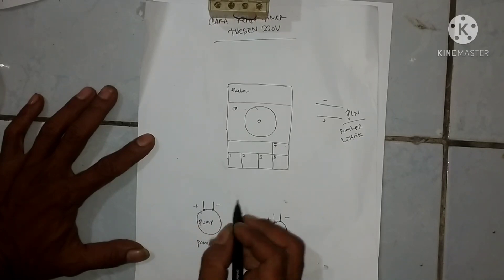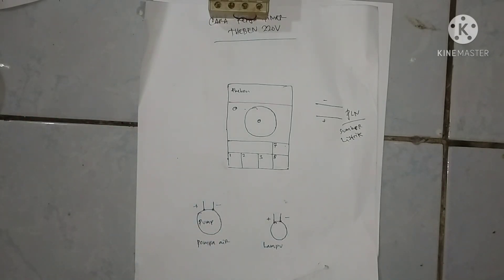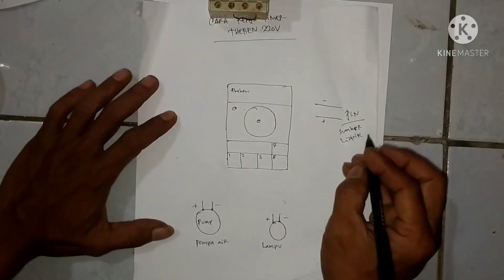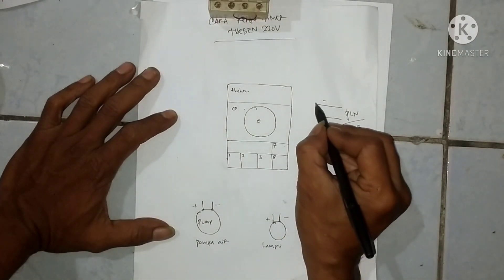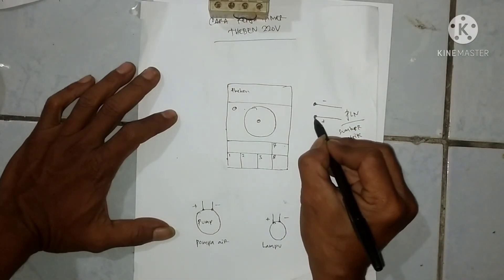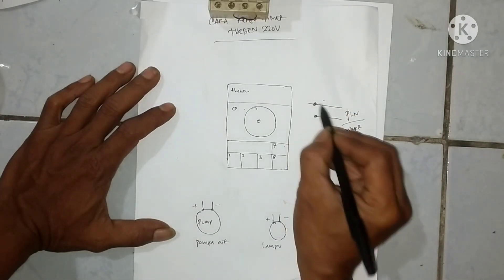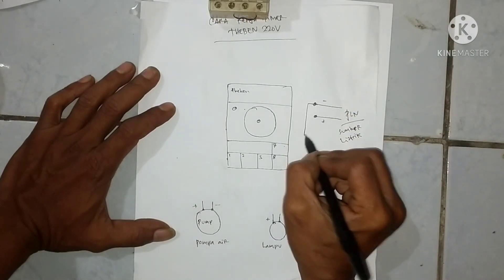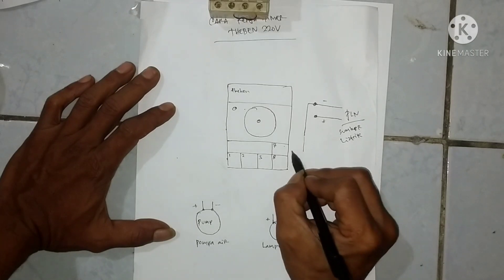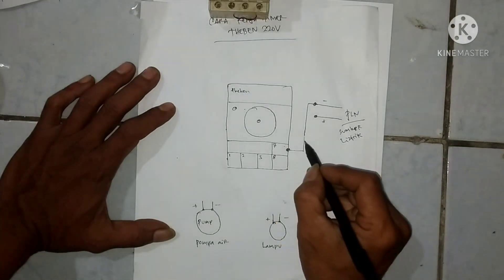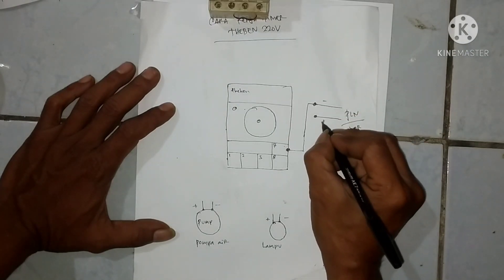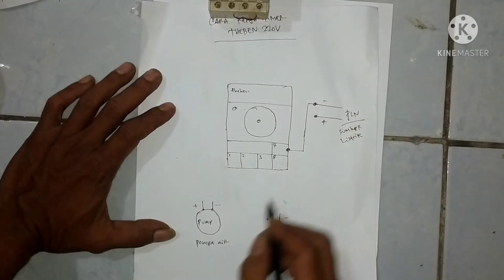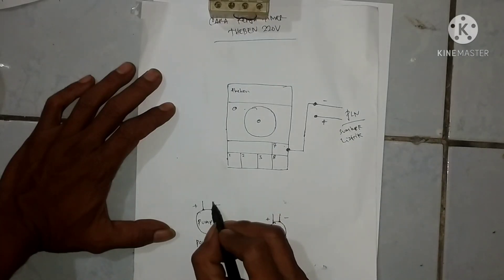Nah ini setiap unit kan punya dua koneksi ya, positif dan negatif di lampu sama pompa itu. Kita tarik terlebih dahulu, anggaplah netral ya, biasanya warna biru netral. Kita tarik masuk ke, nah masuk sini ya, masuk ke sini ke angka 7.